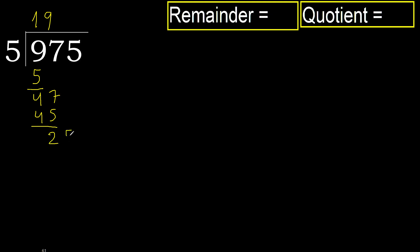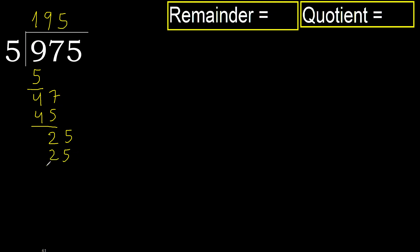Next, 25. 5 multiplied by 5 is 25. It is not greater. Subtract: 0.